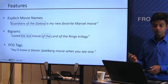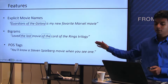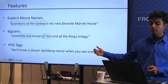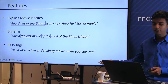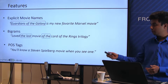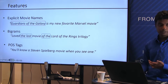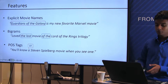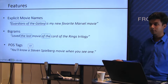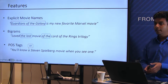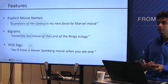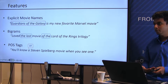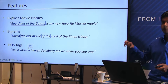The fifth feature is POS tags. For example, given the tweet 'you will know a Steven Spielberg movie when you see one,' this has the domain-relevant entity Steven Spielberg, but it does not actually have an implicit entity mention. Using only domain-relevant entities would misclassify it. POS tags before the semantic cue help distinguish: a determiner like 'a' or 'the' tends to indicate null mentions, while adjectives, nouns, and verbs tend to indicate implicit mentions.